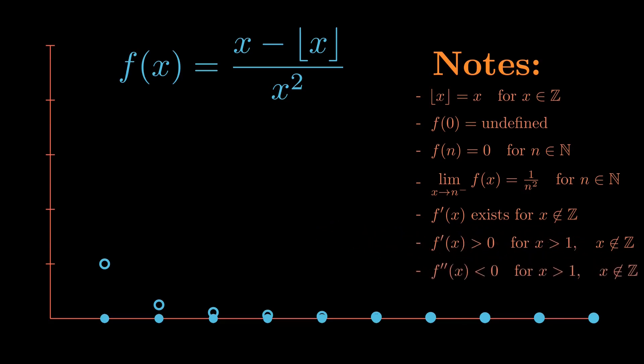We can see how the behavior of this graph is unique for values between 0 and 1, but for all x greater than or equal to 1, we get a series of arcs that are increasing and concave down.